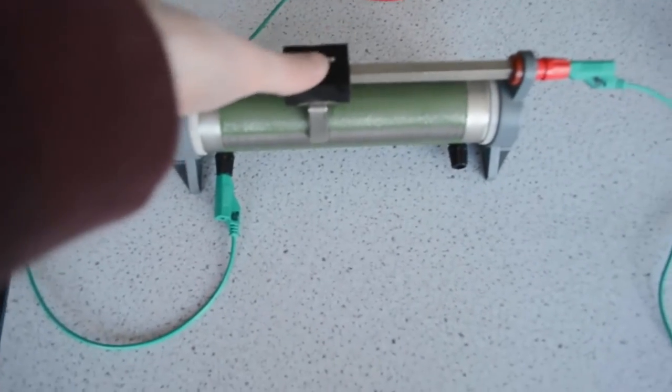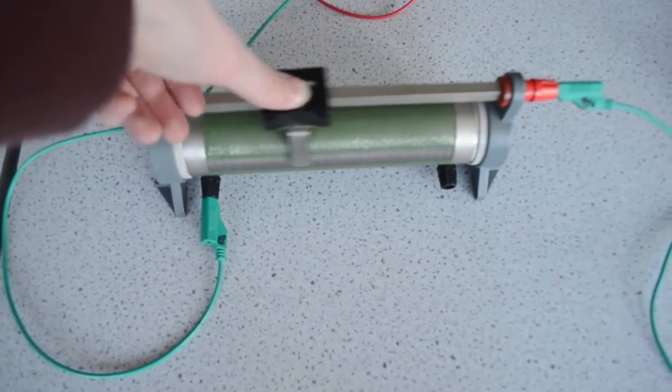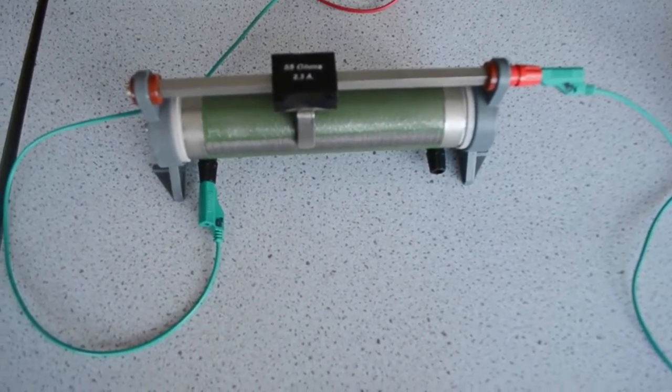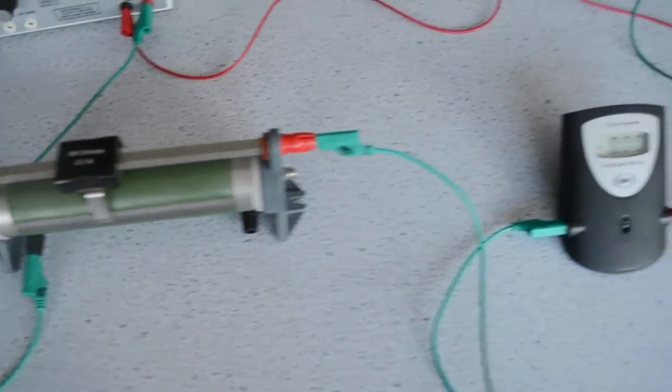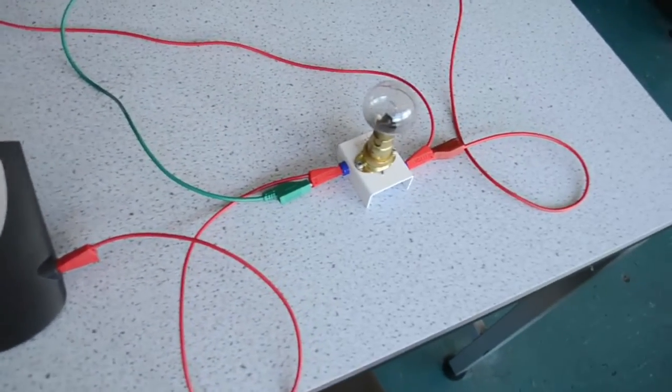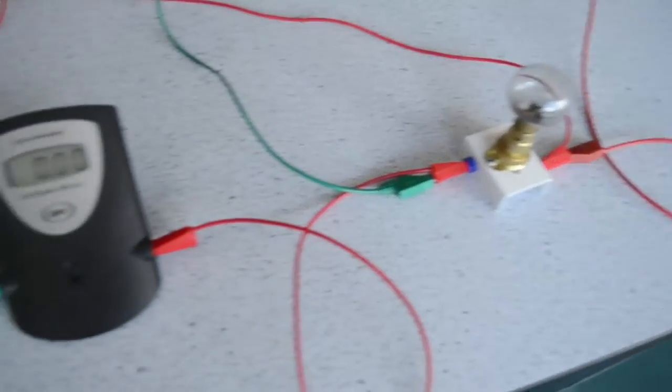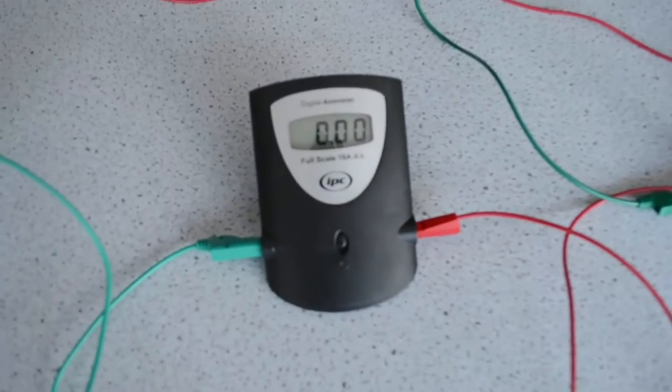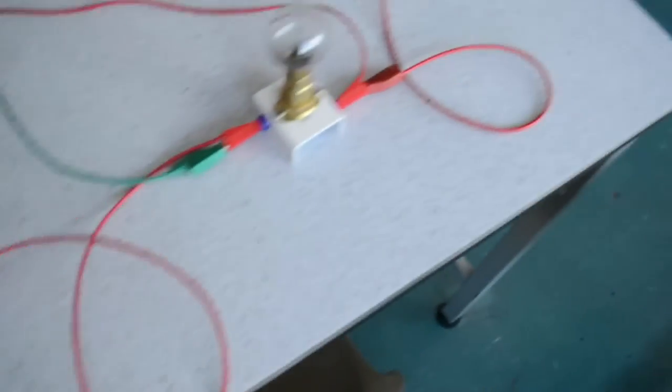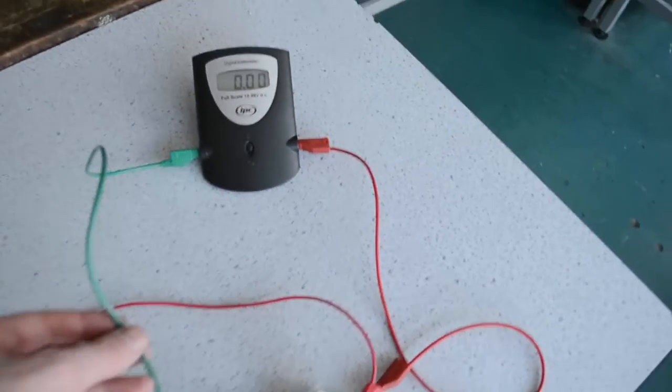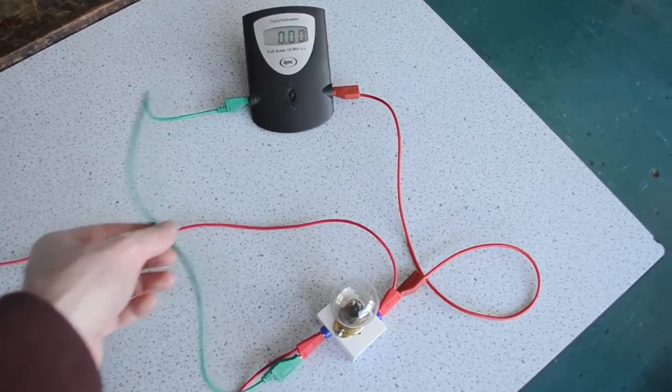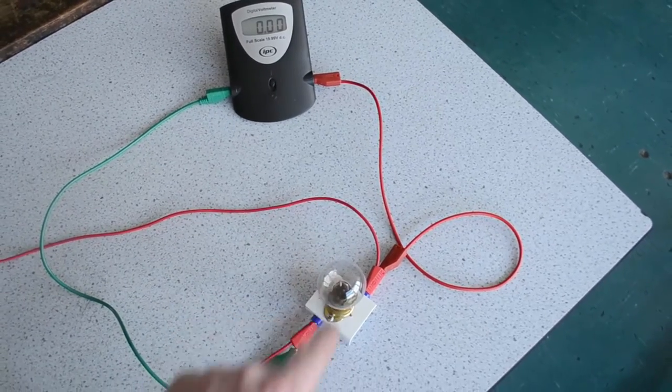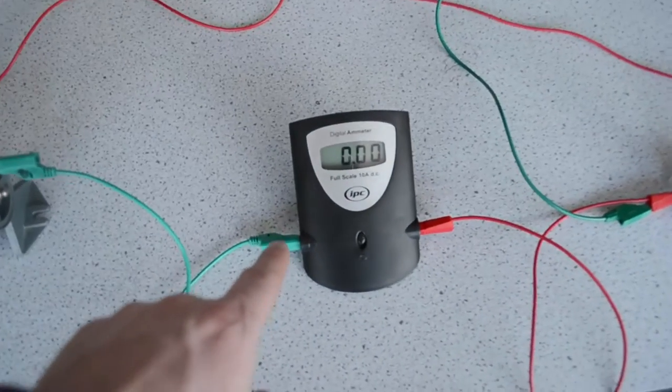So by sliding the slider on the rheostat I can alter its resistance and change the amount of voltage that is being supplied to the light bulb which is connected here. You'll see that in series with the power supply and the light bulb is an ammeter, and then I've connected in parallel with the light bulb a voltmeter so that will measure the voltage just across the light bulb, just across the component that we're testing, and this will measure the current through that component.